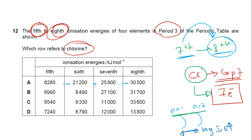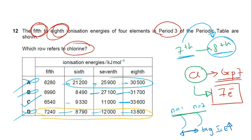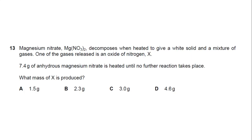Looking at option A, the jump between 7th and 8th is approximately 5000 — not huge enough. Option B shows a big jump between 6th and 7th, not 7th and 8th. Option C shows a large jump between 7th and 8th — that matches chlorine, so the answer is C. Option D has a steady small increase. For reference: D is argon, the one with a jump at 5th–6th is sulfur (Group 6), and the jump at 5th–6th in another option is phosphorus (Group 5).